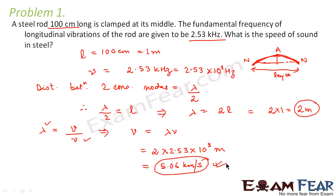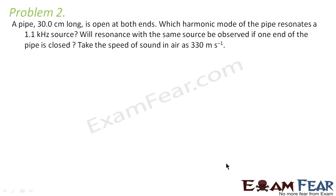Now let us look at another problem. The problem says: a pipe 30 centimeters long is open at both ends — that is an important point, open at both ends. Which harmonic mode of the pipe resonates at a 1.1 kilohertz source? So given is a frequency and the length of the pipe, and we have to find which harmonic mode it will resonate at.